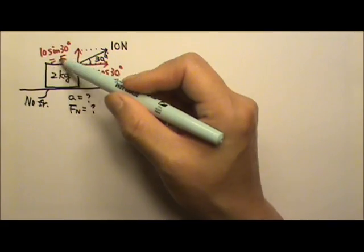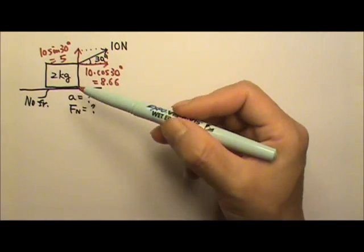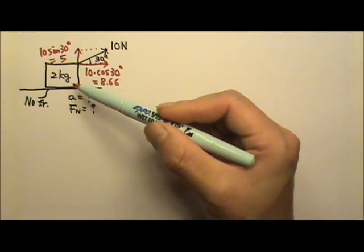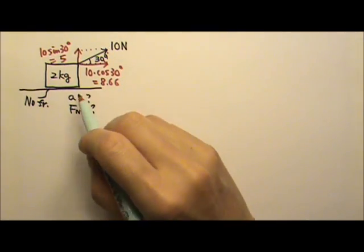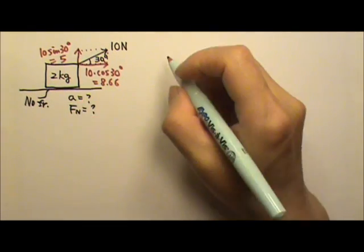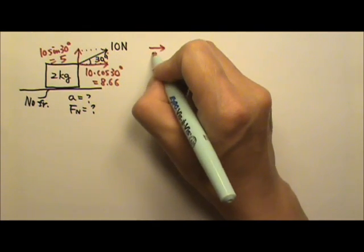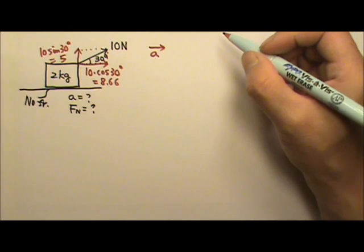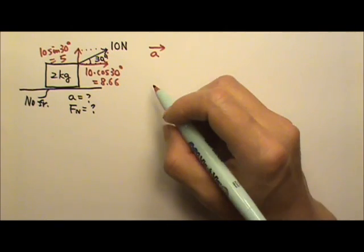So this one has an upward component of 5. The box weighs 20 newtons, so that's not enough to lift the box — we know the box is not going to leave the table. That means the box is going to have an acceleration to the right.